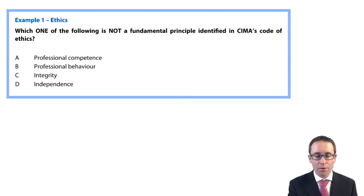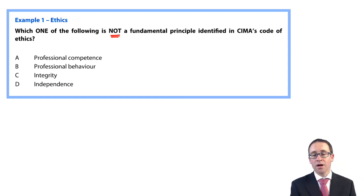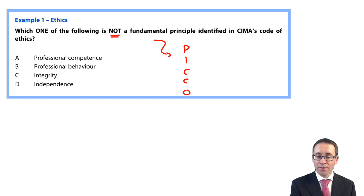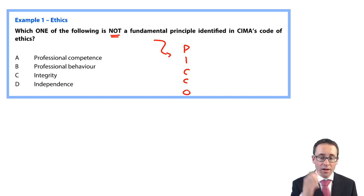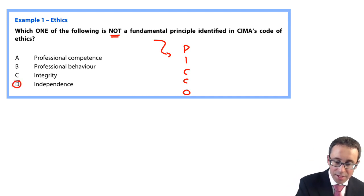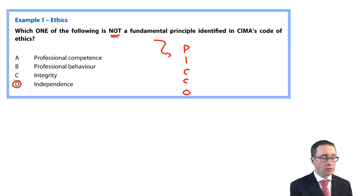Here's a simple past exam question from the old syllabus: which one of the following is not a fundamental principle? The fundamental principles are PICO — professionalism, integrity, confidentiality, competence and due care, and objectivity. The I stands for integrity, not independence. Therefore, independence is the correct answer — it is not a fundamental principle.